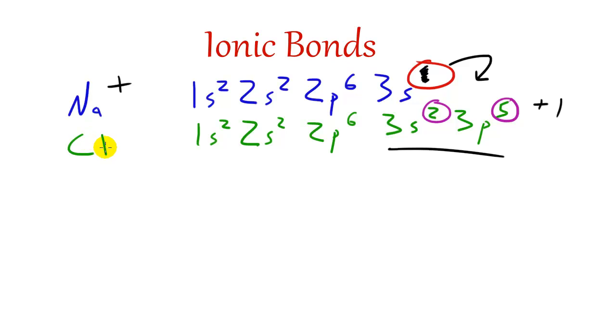Now what happens to chlorine is, since it gains that electron, it now has more electrons than protons, and it becomes a negatively charged ion. And we call negatively charged ions anions, remember that N for negative, just like that.